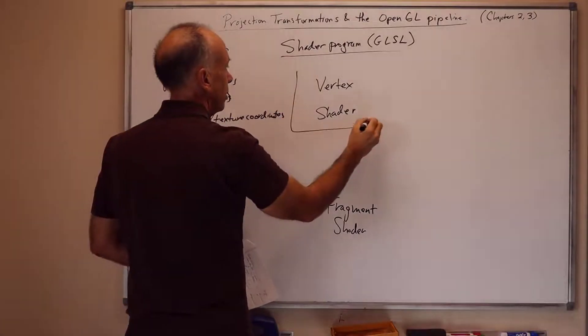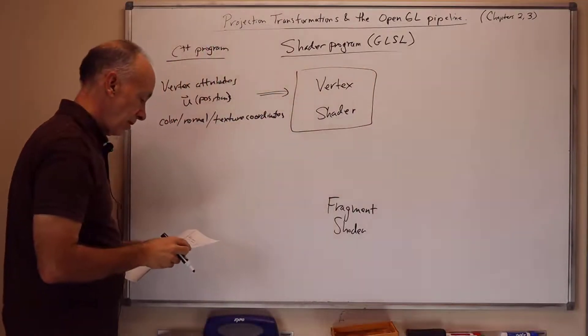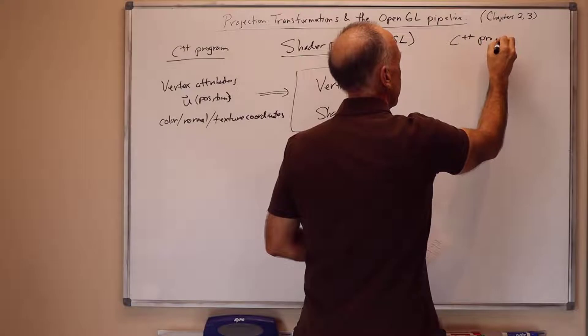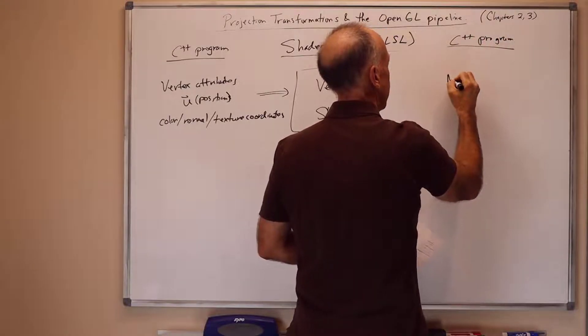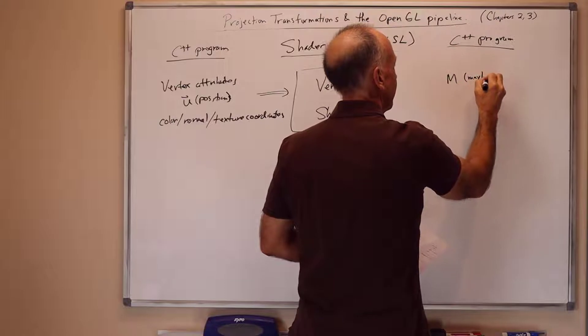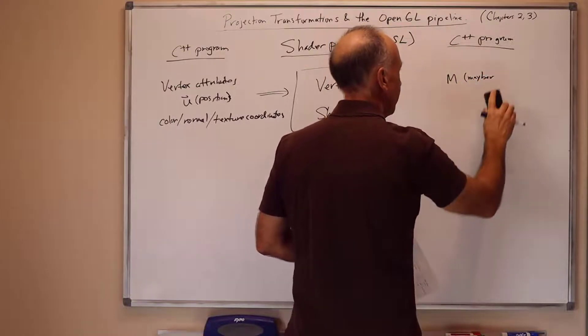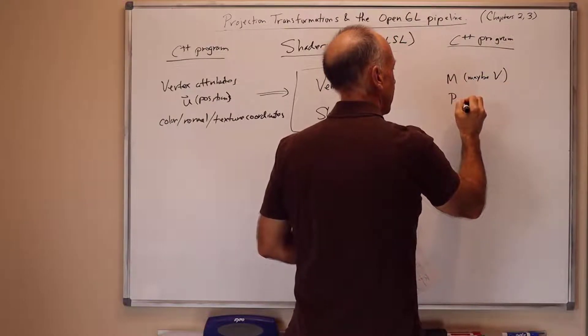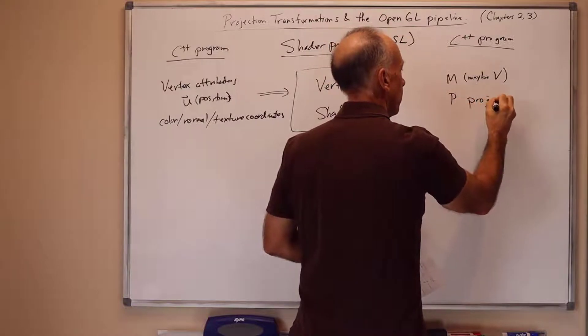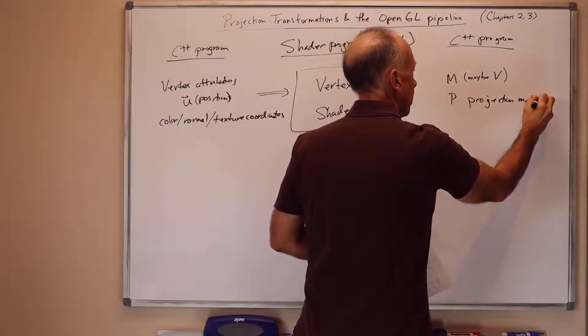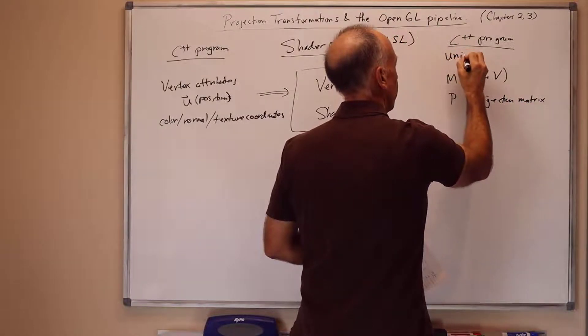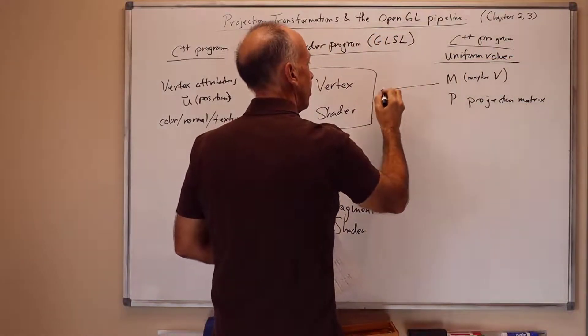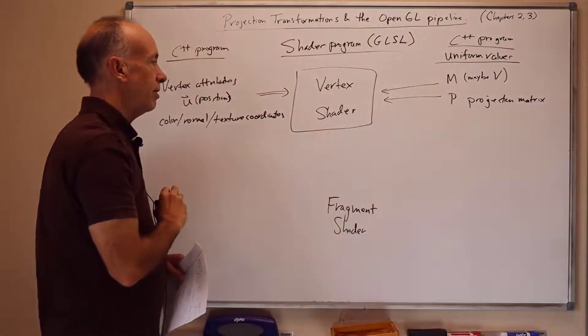These values get set to the vertex shader. Also, we have M and maybe a V, which are the model view matrix, or the model matrix and the view matrix. Usually just the model view matrix and the projection matrix P. And these are usually what are known as uniform values. So these are values that can be read throughout the shader program. And these are also sent to the vertex shader.